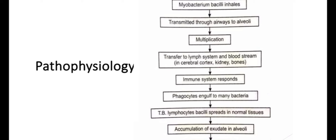Pathophysiology: when Mycobacterium bacilli are inhaled, they are transmitted through the airways to the alveoli where they multiply and transfer into the lymph system and bloodstream, spreading to the cerebral cortex, kidneys, and bones. When the immune system responds, phagocytosis occurs. When phagocytes engulf too many bacteria, TB lymphocytes and bacteria spread into normal tissues, resulting in a combination of exudates in the alveoli and bronchopneumonia.